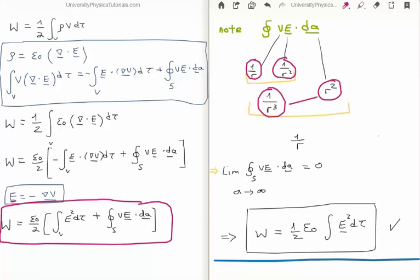So the product of the two of these will go down at one over r. So if you think about it, in the limit, this surface integral in the limit where the area goes to infinity is going to be equal to zero.